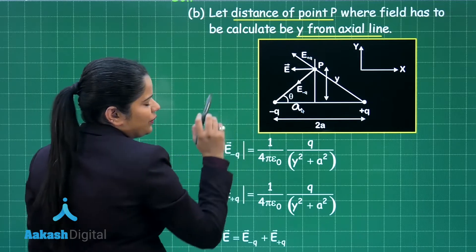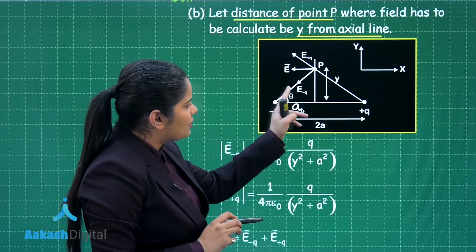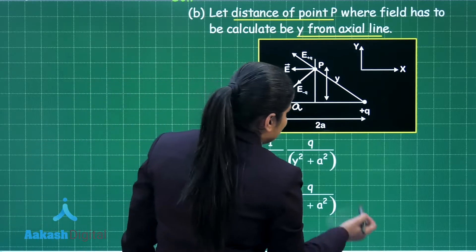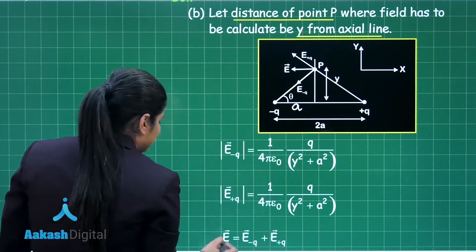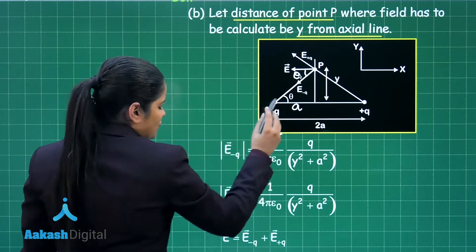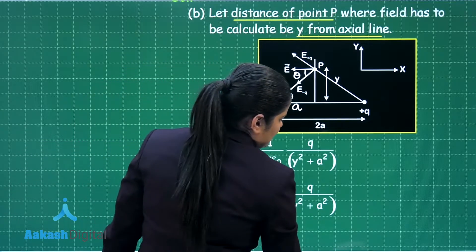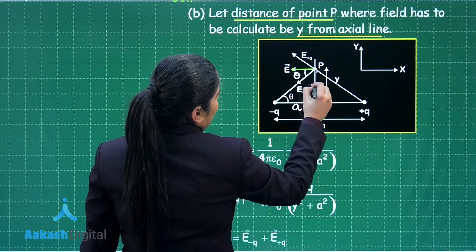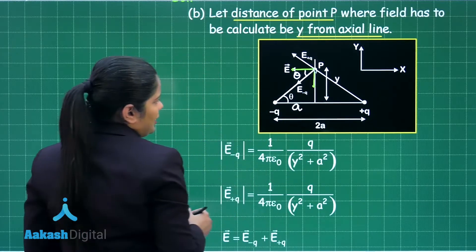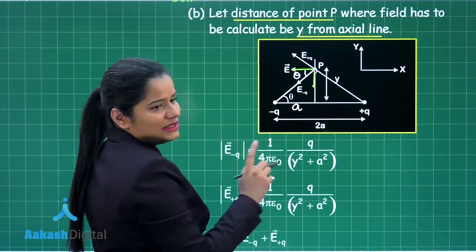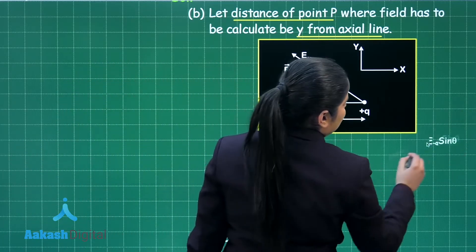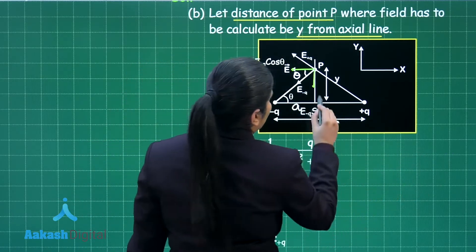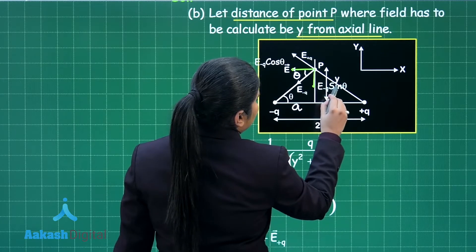We can resolve this electric field into its components. If this angle is θ, this angle is also θ. One component is in the horizontal direction and one is in the vertical direction. The horizontal component is E₋q·cosθ and the downward vertical component is E₋q·sinθ.